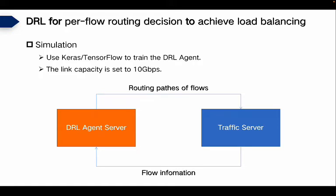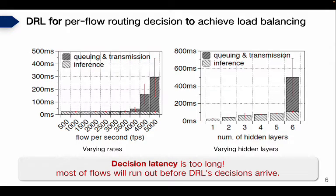To balance traffic load among multiple paths, a straightforward solution is to learn per-flow routing decisions using DRL. Therefore, we conduct a simple motivation experiment. We use a popular learning framework to implement a per-flow routing policy. We simulate two servers: one for the DRL agent which computes routing paths per flow, and another for generating traffic. We send the flow information to the agent. The link speed between the two servers is set to 10 Gbps.